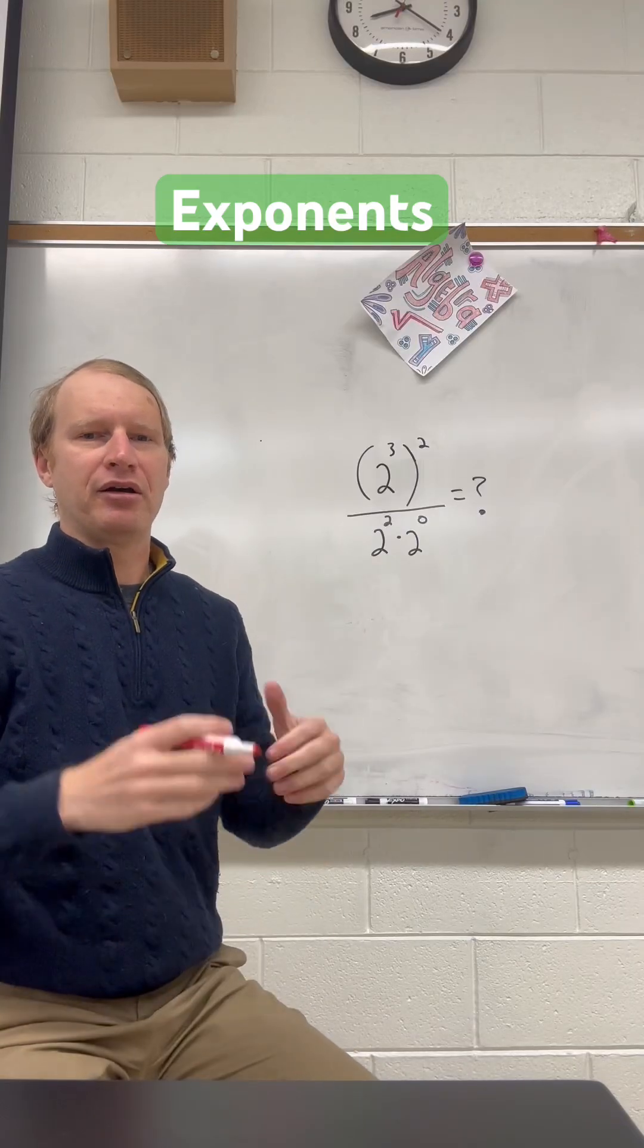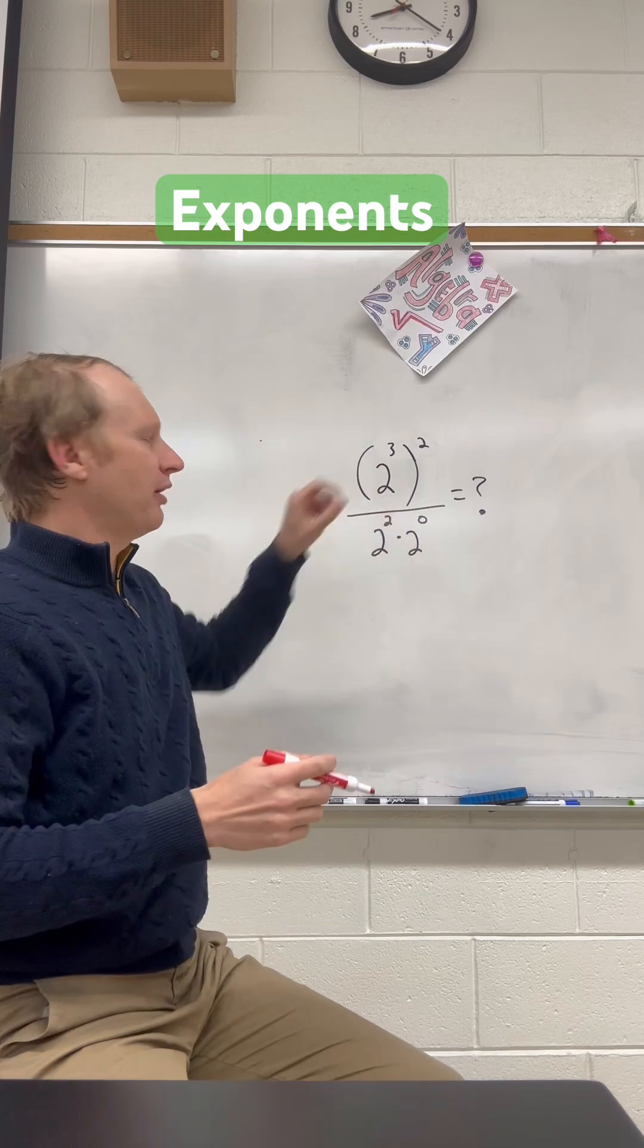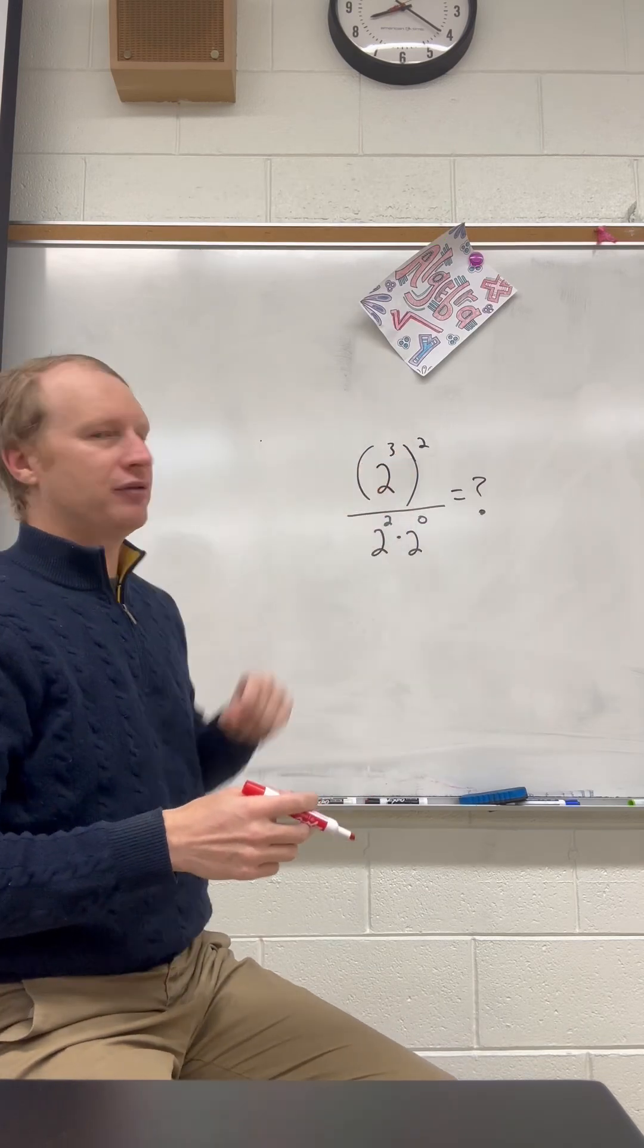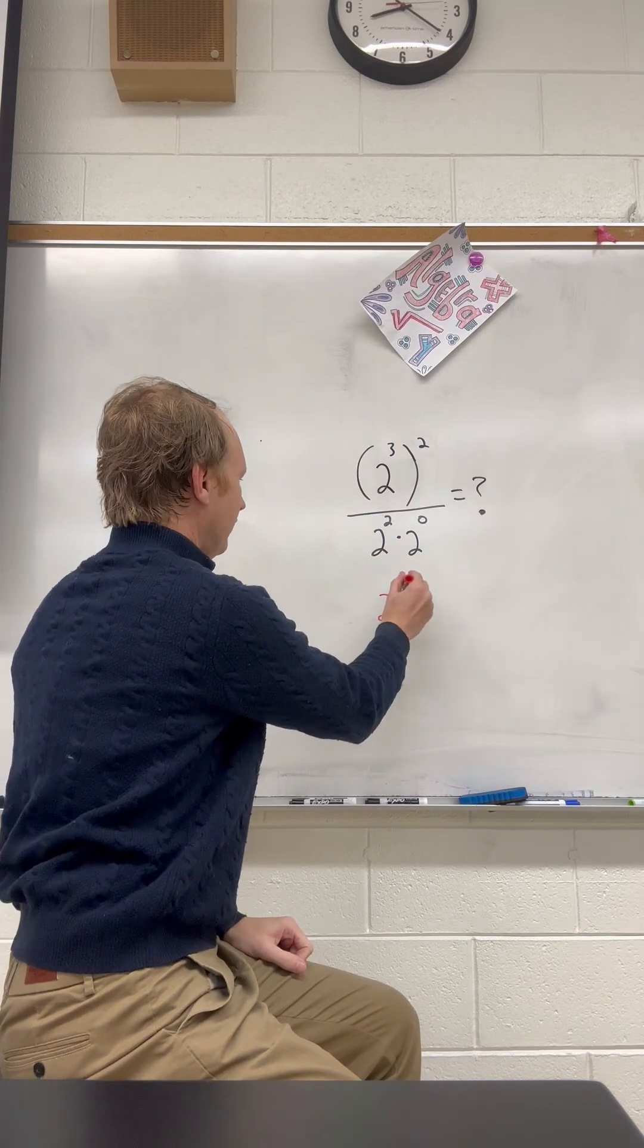Let's work on the problem behind me here. We've got a lot of exponents, so let's use our properties of exponents. On the top of the fraction, we have 2 to the 3rd to the squared, so we're going to multiply the exponents. That's 2 to the 6th.